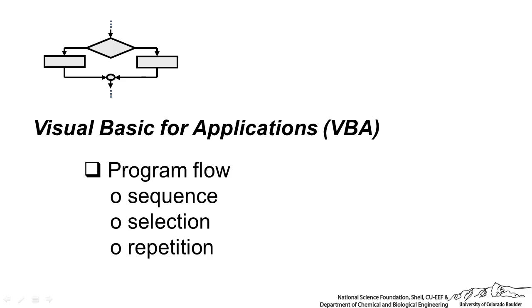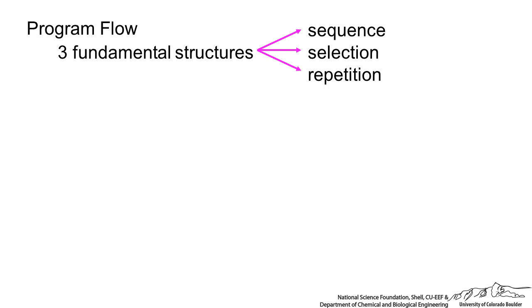In this screencast I am going to show you basic program flow in Visual Basic for Applications. There are a couple different types of program flow. Program flow has three fundamental structures: sequence, selection, and repetition.